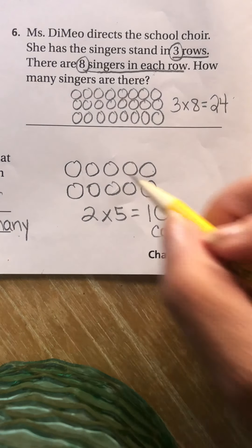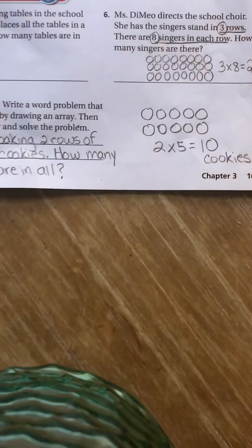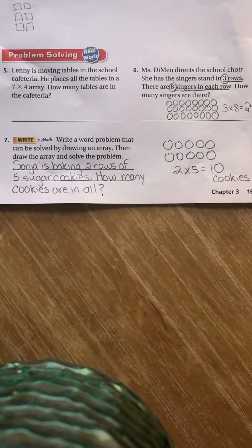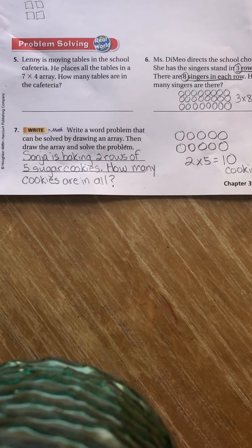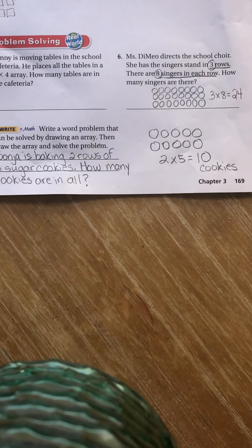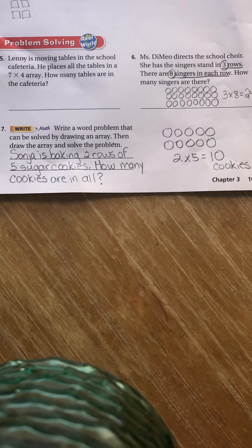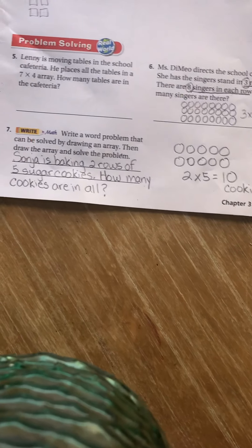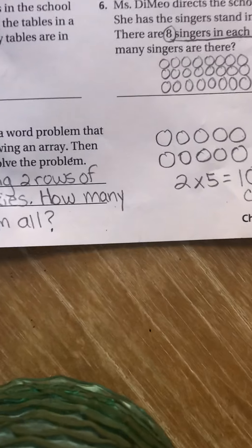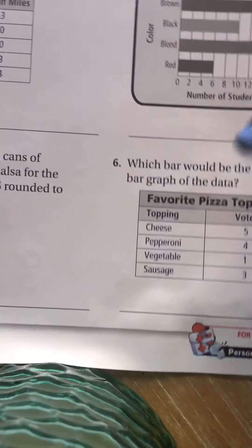Please make sure you draw the array. Please make sure that you write the question — all of that has to be in your answer. Sonia is baking two rows of five sugar cookies. How many cookies are there in all? Two times five is 10. And here comes my daughter, so I'll wait till she comes into the house before I keep going. She's here, but now I'm going to keep going. Pause the video if you needed to.